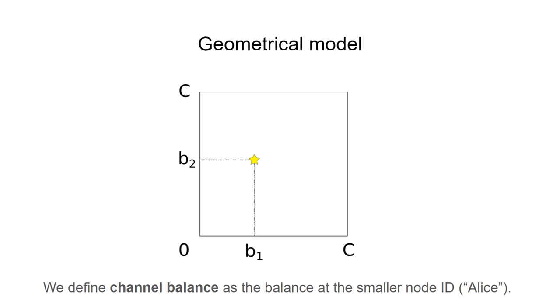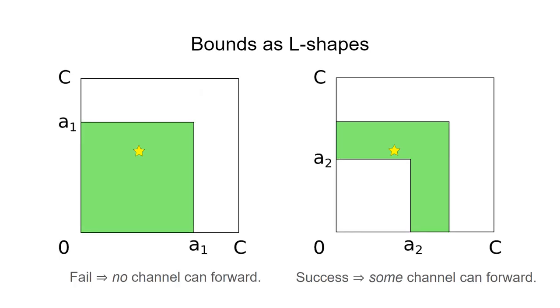So if the true balances in these channels are B1 for the first channel and B2 for the second channel, then we can depict again with a star the position of the true balance that the attacker wants to learn as precisely as possible. So how does the attacker do that?